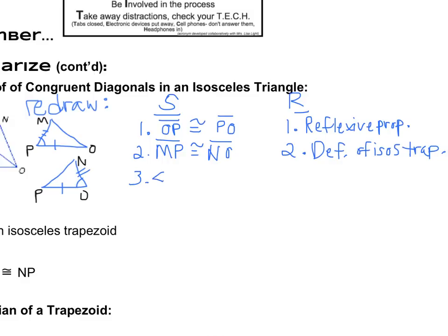The next thing we want to do is we want to talk about the angle that we marked, and so we'll make sure that we label that with three letters, because we've got some overlap diagrams. So angle MPO is congruent to angle NOP. And the reason for that is, again, just definition of an isosceles trapezoid.